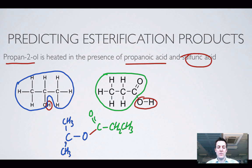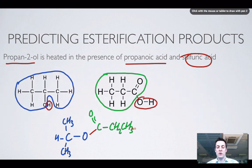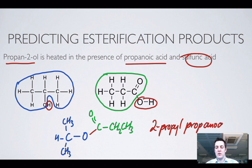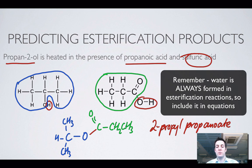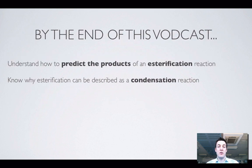Naming this molecule is a little more difficult because the alcohol part is branched. I'm going to name it after the alcohol and then the acid: this would be 2-propyl propanoate. I'm taking the name of the alcohol — propan-2-ol, or 2-propanol — which becomes 2-propyl, and then propanoic acid becomes propanoate.